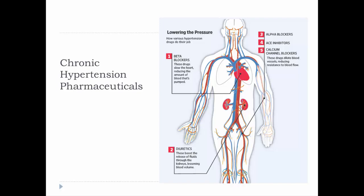Calcium channel blockers block calcium entry into the heart, which reduces contractility and therefore lowers cardiac output. These drugs also cause blood vessels to dilate, reducing peripheral resistance, which further decreases blood pressure.